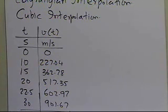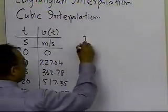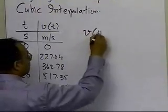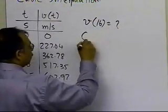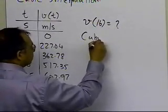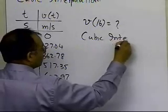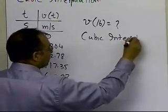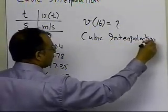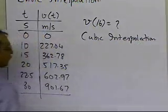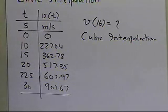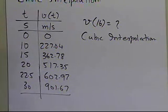So you're given six data points, and you're asked to find the value of the velocity at t=16 by using cubic interpolation. The first thing we have to think about is that we're going to do cubic interpolation to find the value of the velocity at 16, so we have to choose four data points to do that.